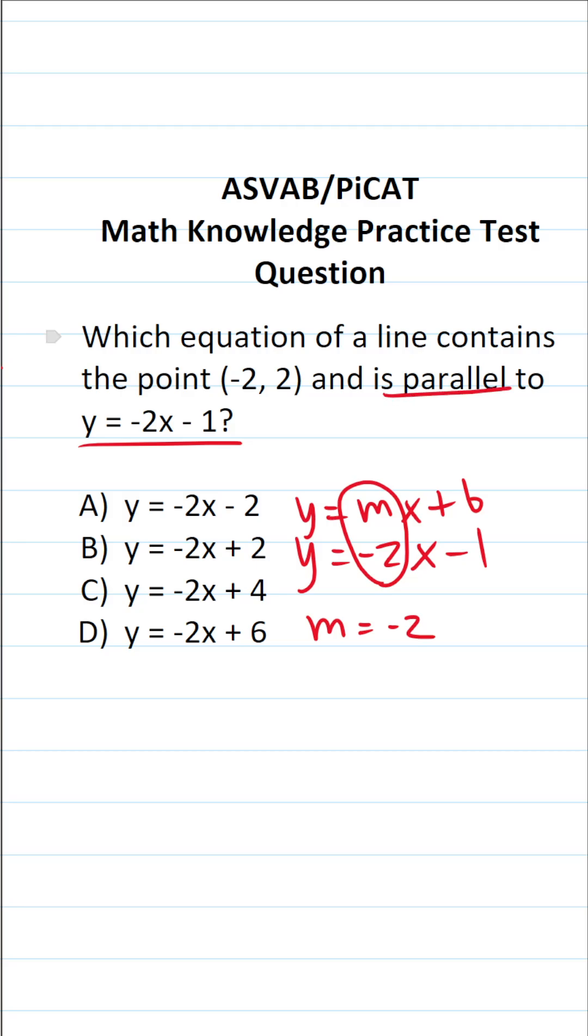As it happens, parallel lines have equal slopes, so we know the slope of our equation of the line that we're looking for is going to have a slope of negative 2, and you can see that in the answer choices, all the slopes are in fact negative 2.